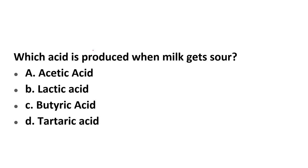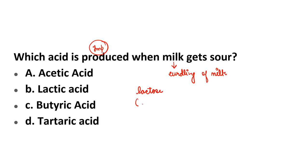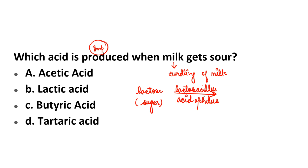Which acid is produced when milk gets sour? This is a very important question repeated many times. When milk curdles — also called curdling of milk, as when making curd — a bacterium called Lactobacillus acidophilus converts the lactose sugar in milk into Lactic acid. Curd is acidic with a pH less than 7. So the correct answer is B — Lactic acid.